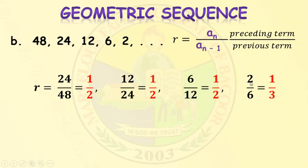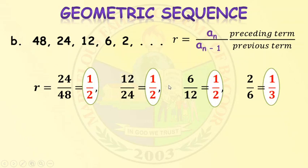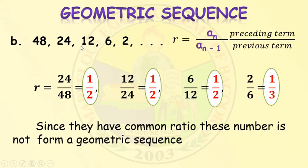However, 2 is the preceding term and 6 is the previous term, so 2 over 6 equals 1/3. Notice that not all the ratios are the same — the last ratio is 1/3, which is different from the earlier ratios of 1/2. Therefore, the sequence 48, 24, 12, 6, and 2 is not a geometric sequence because there is no common ratio.